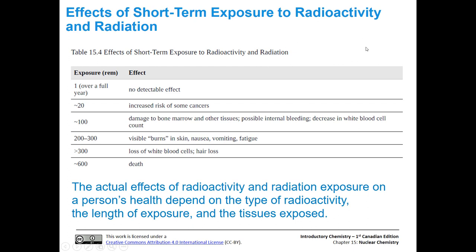Looking at the effects of short-term exposure: at one REM — below the average annual 358 millirem — there is no detectable effect, so it's basically harmless. At 20 REM, there is an increased risk of some cancers. At 100 REM, bone marrow and other tissues are damaged, and internal bleeding and decreased white blood cell count can occur. At 200 to 300 REM, visible burns, nausea, vomiting, and fatigue appear. Above 300 REM, white blood cells and hair are lost. Around 600 REM, death occurs. The actual effects depend on the type of radioactivity, the length of exposure, and the particular tissues exposed, hence the approximate values.